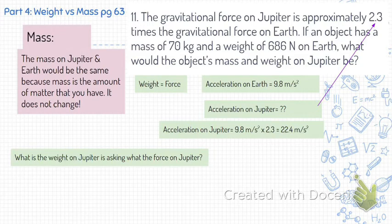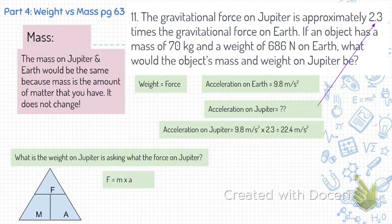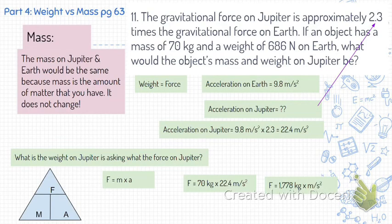Now I can use that to figure out what my force is, because if I'm asking what the weight is, I'm just asking what the force is on Jupiter. Force equals mass times acceleration. If my mass is 70 kilograms and my acceleration is 22.4 meters per second squared, my force or weight on Jupiter would be 1,778 kilograms times meters per second squared.